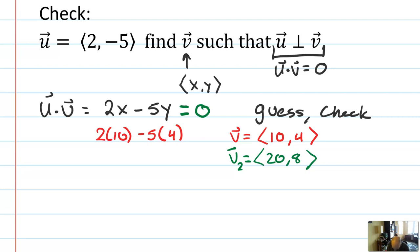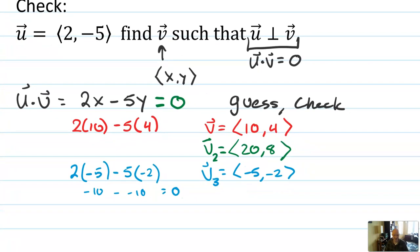Now could I also take that vector v and scale it up? Make it 20 comma 8? Absolutely. These are going to do the same thing. 2 times 20 would be 40, and 5 times 8 is 40. Instead of those, we cancel out 2. Could you do something else? Sure. Could I have negatives in here? Yeah. How about negative 5? So 2 times negative 5 would be negative 10. So I would need 5y to also be negative 10. So let's do minus 5 times negative 2. Then this would be negative 10 minus minus 10, which would be 0. So another v3 would be negative 5 comma negative 2.